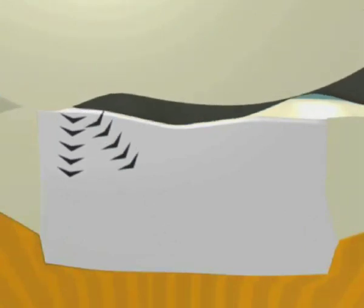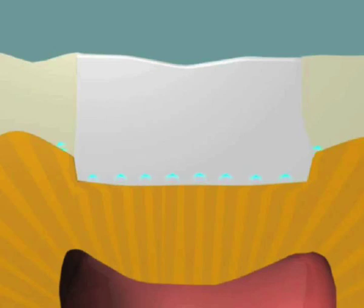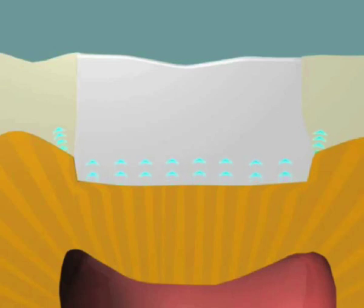Glass ionomer cements provide exceptional stability of the adhesive interface over time. Many external factors will challenge the integrity of bonded surfaces — for example, pulpal fluid, transmitted occlusal stresses, and thermal expansion and contraction stresses. Potentially most challenging is pulpal fluid; fortunately, glass ionomer cements are unchallenged by fluid pressure from the pulp. In fact, pulpal fluid benefits the glass ionomer over time by strengthening the cement adjacent to the dentin surface. This is especially important given the negative impact positive fluid movement has on resin adhesives over time.